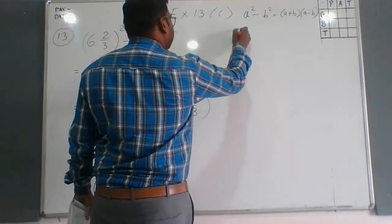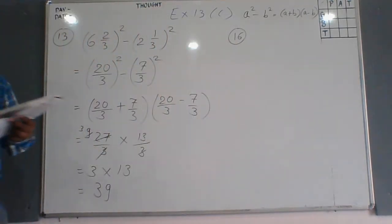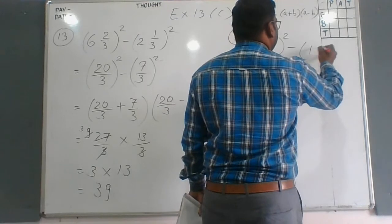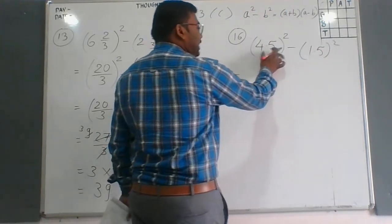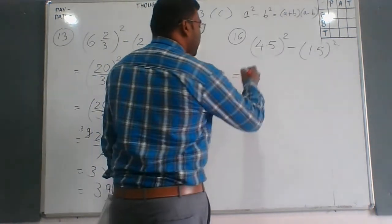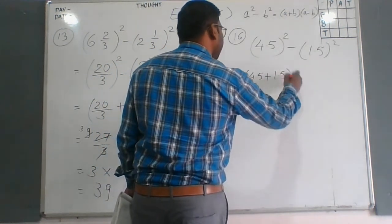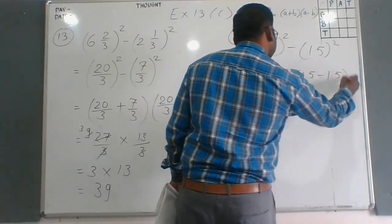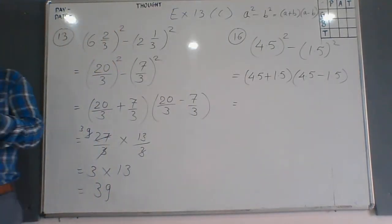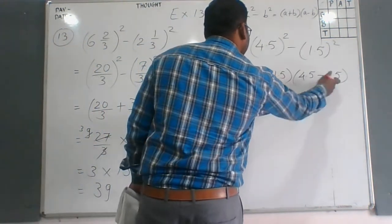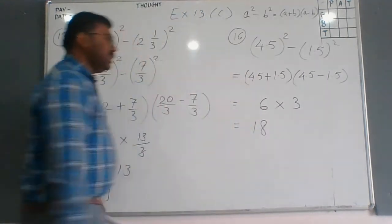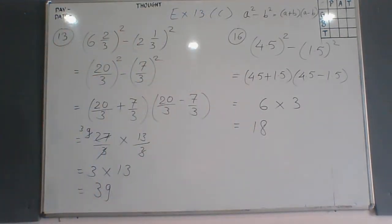Next we are solving question number 16: 4.5² minus 1.5². Once again it is in the form a²-b², so a²-b² becomes (a+b)(a-b). The addition of the two values: 4.5 plus 1.5 equals 6. The subtraction: 4.5 minus 1.5 equals 3. So the answer is 6×3 = 18. Students, write it in your notebooks — writing is very important.